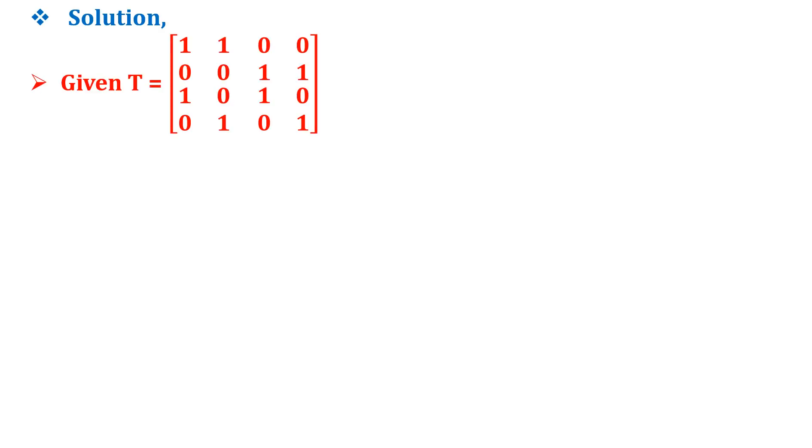It is given that T is a 4 cross 4 matrix. Now applying row reduced echelon form,